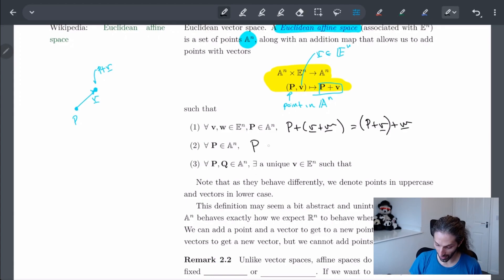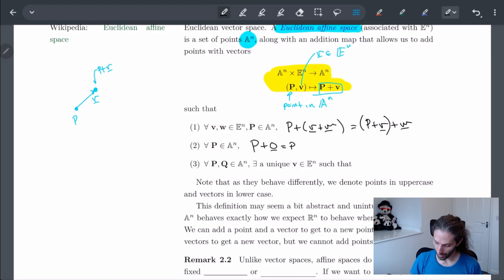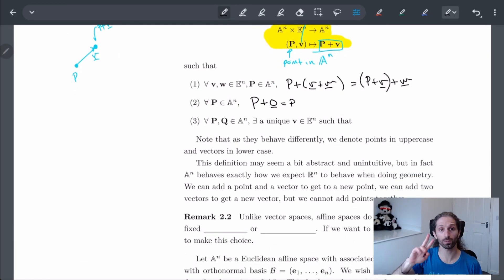Additionally, for every point, if I add the zero vector, in other words I don't go anywhere, I should stay exactly where I'm at. And then finally, for every two pairs of points, there should be a unique vector that takes me from that point to another. So there should be some unique vector V where I can go from P to Q.